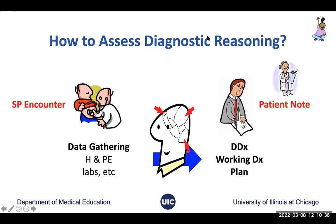Another question: who scores the patient notes? Mostly faculty are scoring the patient notes. Three people have non-clinician raters, and for three people the notes aren't scored at all. We have some OSCEs where notes aren't scored either, so that's not unusual.